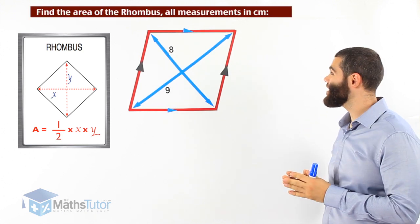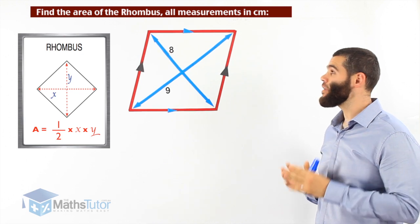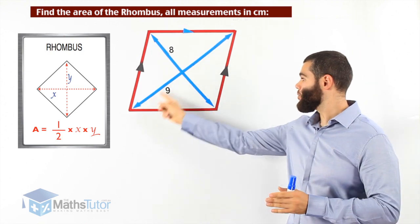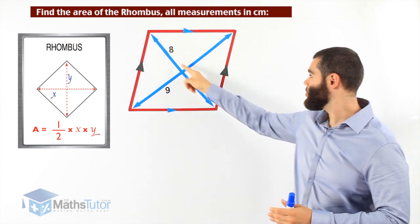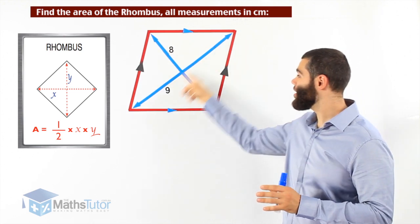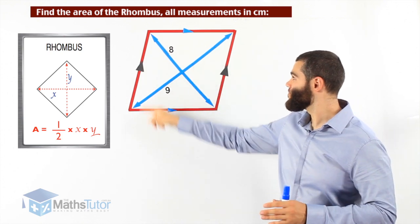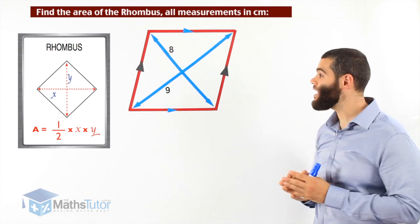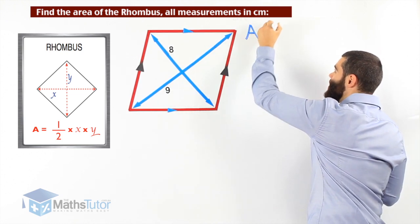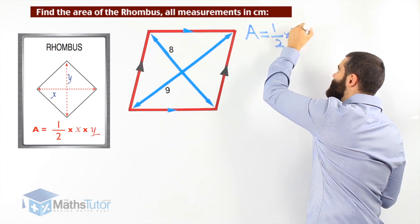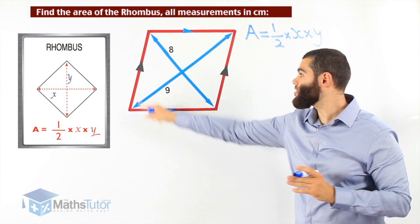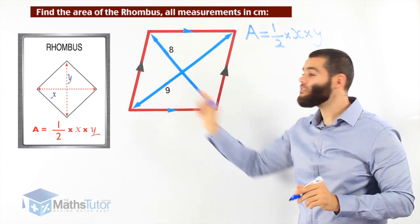Now we're asked to find the area of a rhombus. Measurements are in centimetres. We can see that the diagonals: diagonal number one is nine centimetres and diagonal number two is eight centimetres. In a rhombus, the diagonals may look the same but one is longer than the other — this one is nine and this one is eight. We're now going to use the formula half times x times y. We always write the formula first: Area equals half times x times y. Remember, x and y are not any of the sides of a rhombus, but the diagonals.